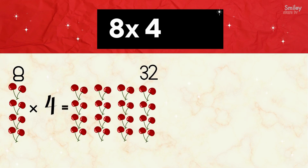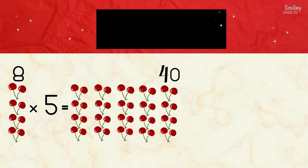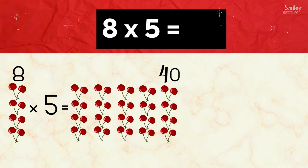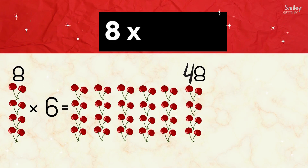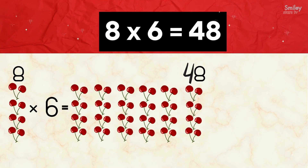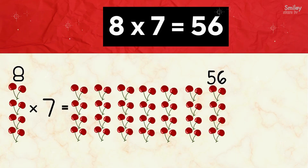8 fours are 32. 8 fours are 32. 8 fives are 40. 8 fives are 40. 8 sevens are 56.